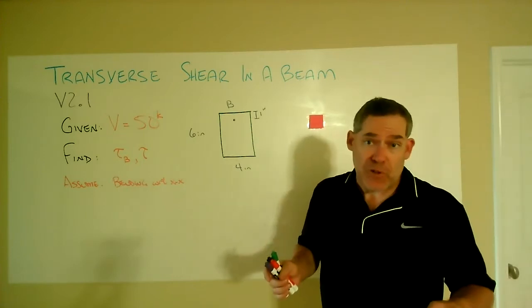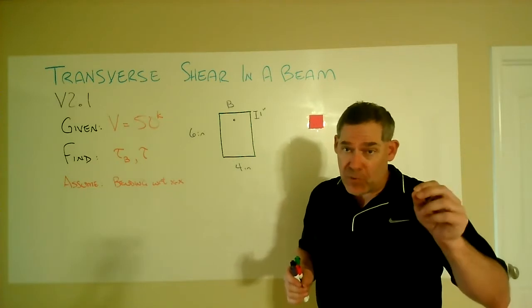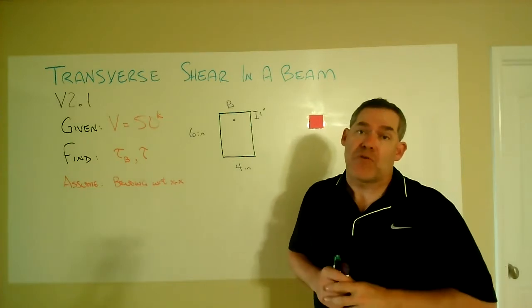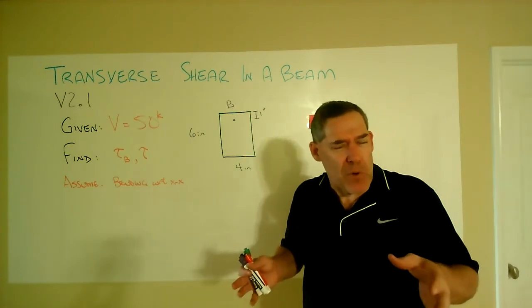We're going to do actually a couple of things. The problem statement asks us to find the shear stress at a single point, point B, and then define the distribution across the entire cross-section, which means there's actually a lot more going on.